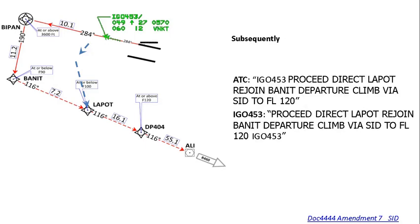If rejoin instructions are subsequently given, ATC may say 'IFly 453, proceed direct to LAPAUT, rejoin BANNET departure, climb by SID to flight level 120.' The aircraft was given heading 190 initially, and is now instructed to rejoin the BANNET departure at LAPAUT, bypassing BIPAN and BANNET. Therefore, the pilot does not follow restrictions for BIPAN and BANNET, but must follow all SID restrictions from LAPAUT, including Delta Papa 404 and onwards.